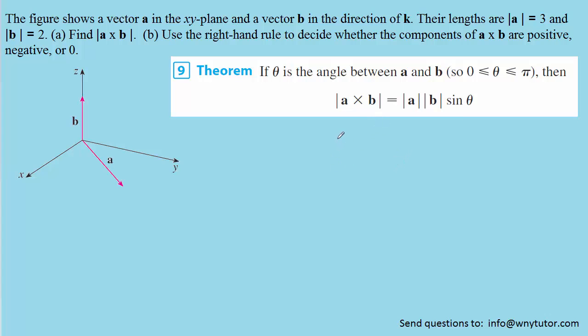We can employ this theorem in order to find the length of this cross product. We simply have to plug in the magnitude of vector A, which was stated in the question as being 3. The magnitude of vector B was given as 2.